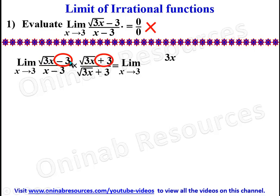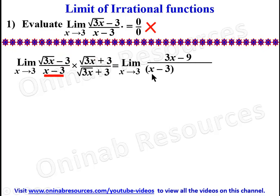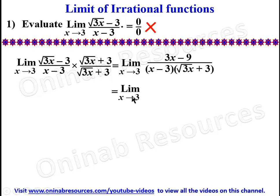Continuing to expand the numerator: the second term gives negative 3 times positive 3, which is negative 9. So the numerator simplifies to 3x minus 9. The denominator is (x minus 3) times (root(3x) plus 3).